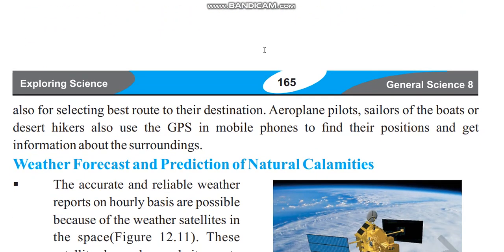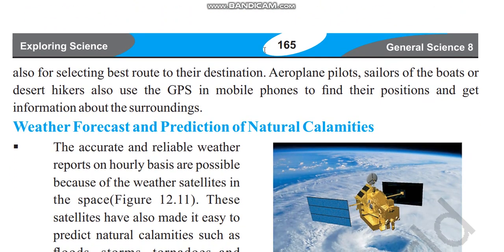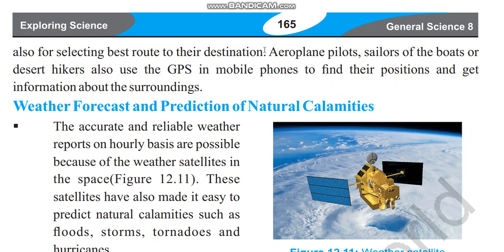GPS is also used for selecting the best route to a destination. Aeroplane pilots, sailors of boats, and desert hikers also use GPS on mobile phones to find their position and get information about surrounding weather, forests, and prediction of natural climates.